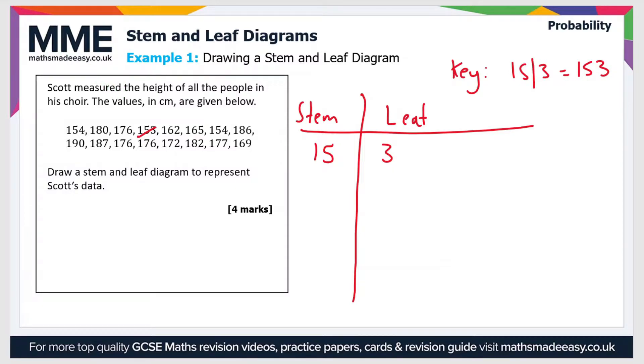So that's 153. If we continue this process for the rest of the heights, the next smallest value is 154. Now that appears twice so we put it in the stem and leaf diagram twice. And then that's it for the 150s so we'll move on to the 160s next.